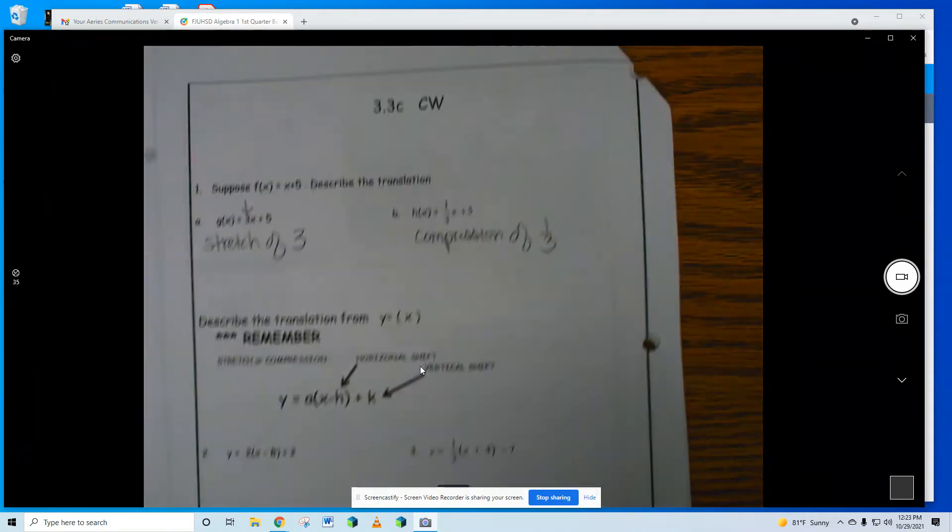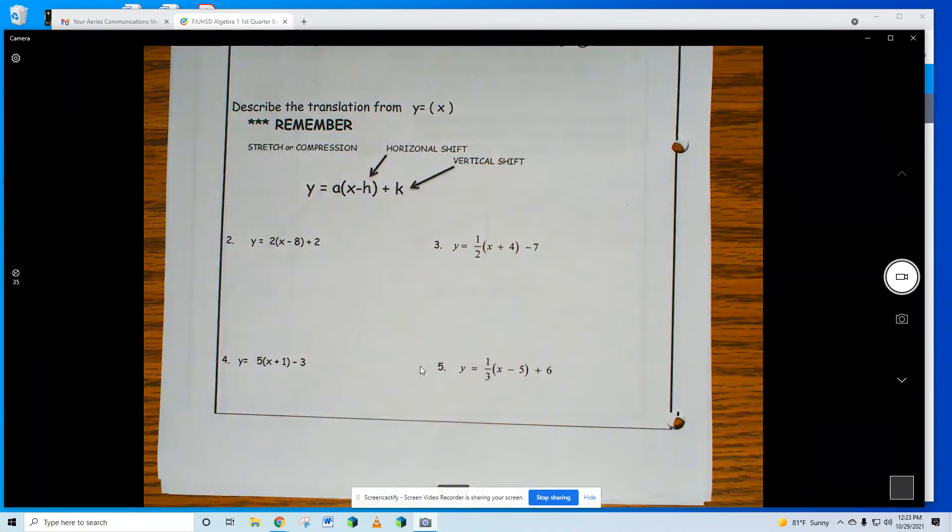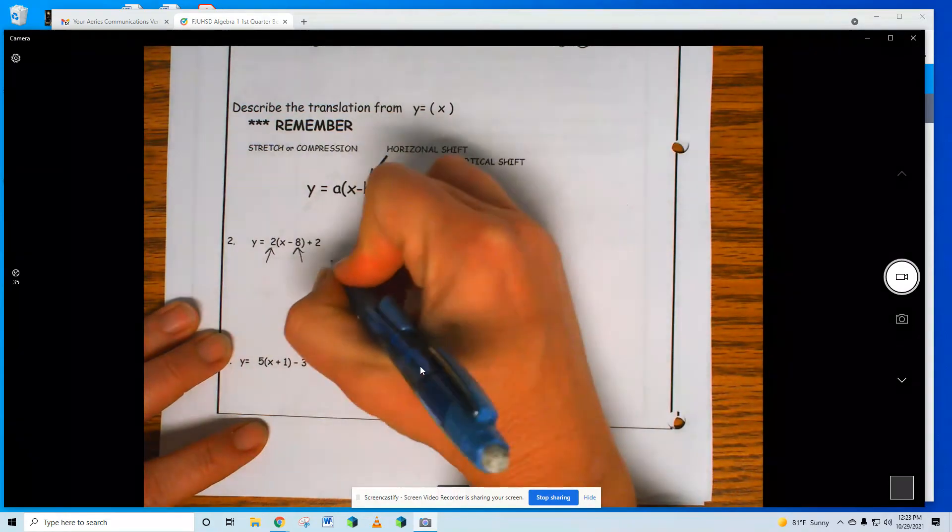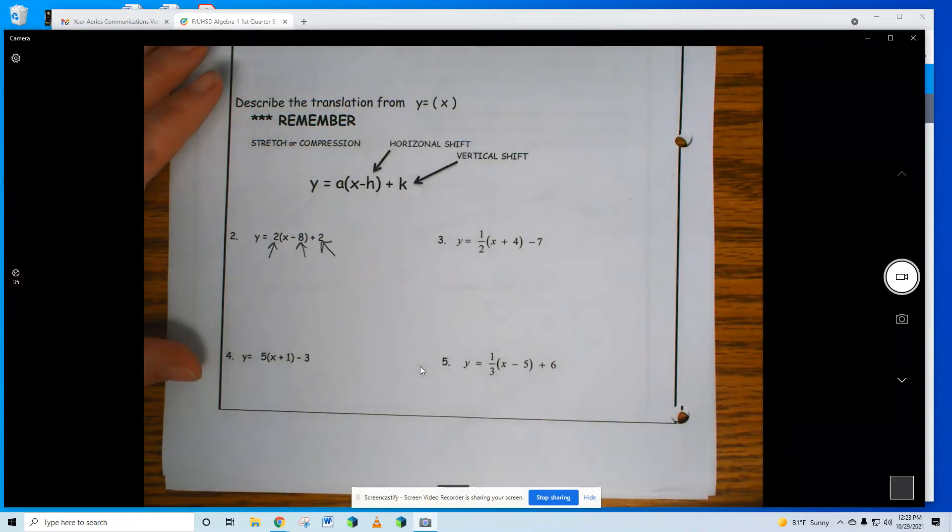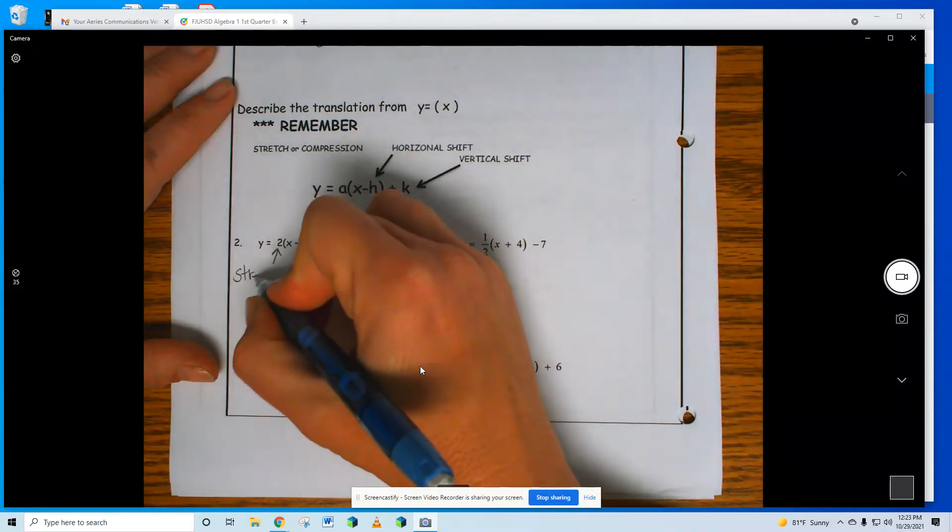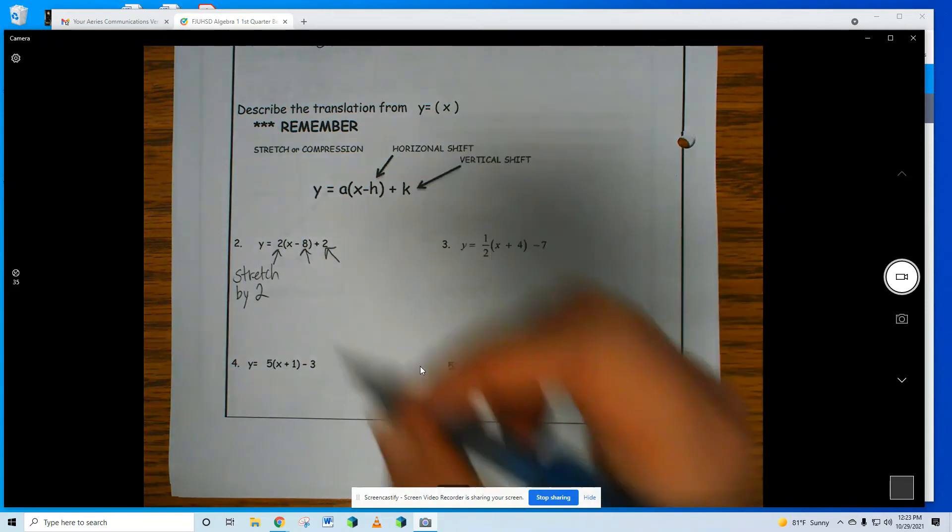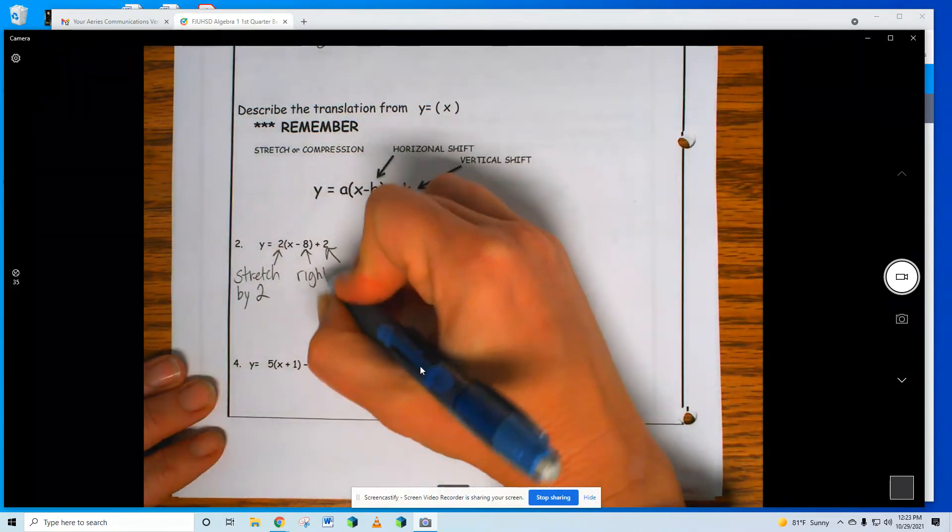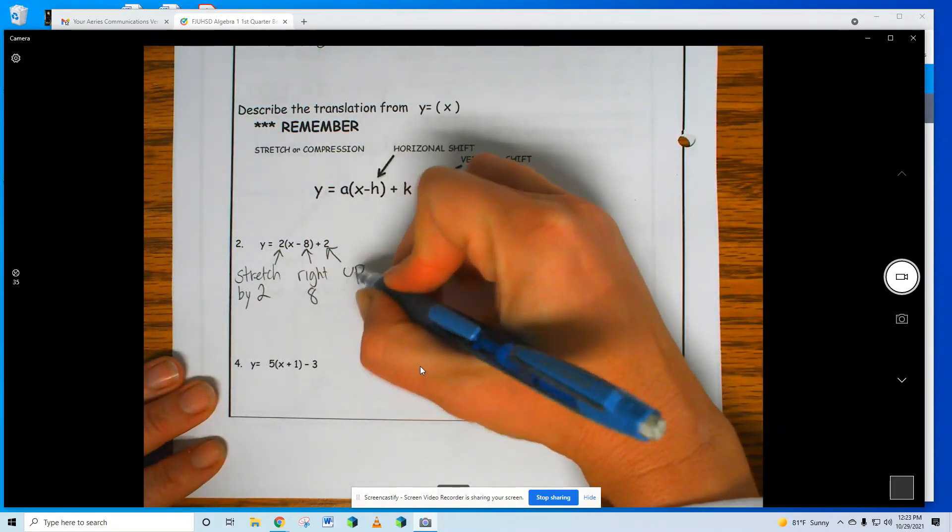So now, here we go. I am putting everything together, which means you need to tell me about the h and the k. The a does what? The 2 does what? The 8 does what? The 2 does what? 3 things are happening on number 2. A compress? No, compression means a fraction. Stretch, stretch of 2. What's the 8? Be careful. 8 right, nice. And what's the 2 at the end? Up 2.